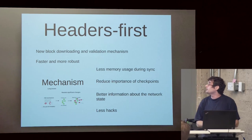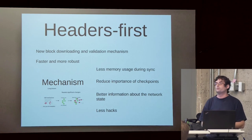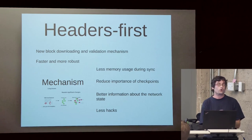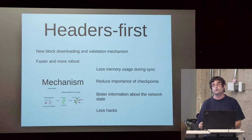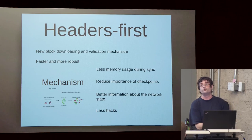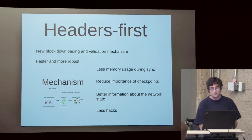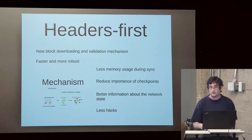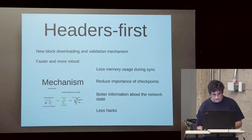There are more obvious improvements: we get much better information about the state of the network. Warning the user that there is a big reorganization or fork going on is much easier, as we learn about it much sooner before we're actually fully validating. Also not something we're using yet, but we will. And it's just much less hacky.